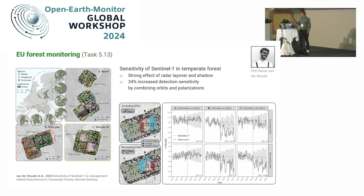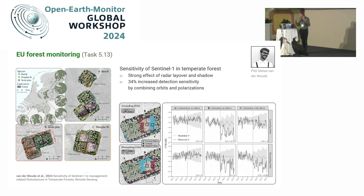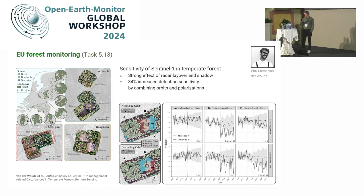We are moving from the tropics to Europe. That is work where a PhD student, Sietze, has done research on the sensitivity of Sentinel-1 in temperate forests. The tropics are relatively easy — in primary tropical forests, we don't have seasonality and we deal with relatively simple changes. But in Europe it's a little bit different. He has shown the strong effect of radar layover and shadow, and emphasized that you have to accurately combine different polarizations and different orbits to make the most out of Sentinel-1 data.